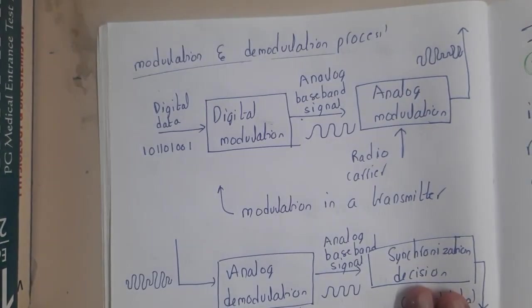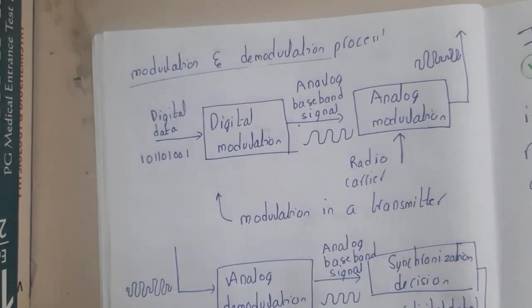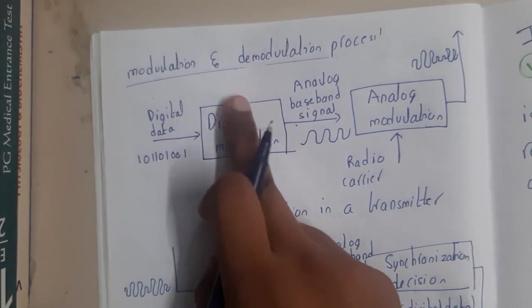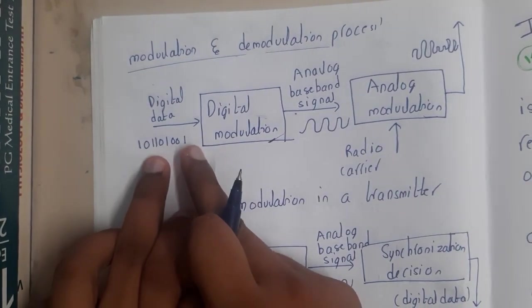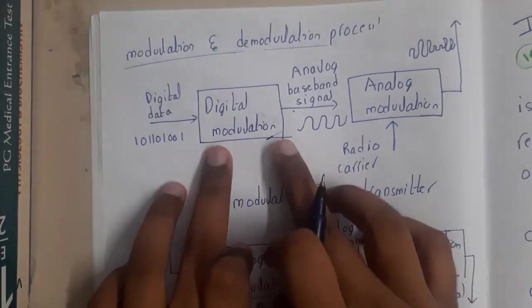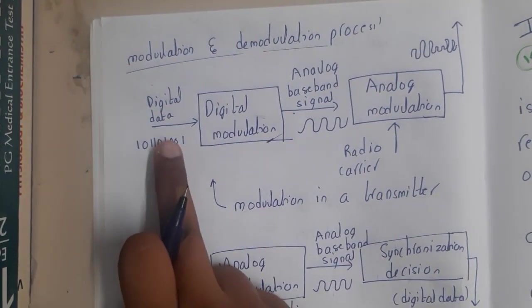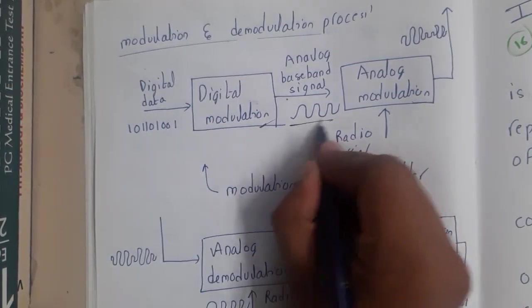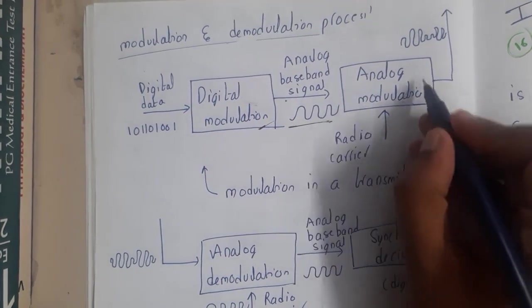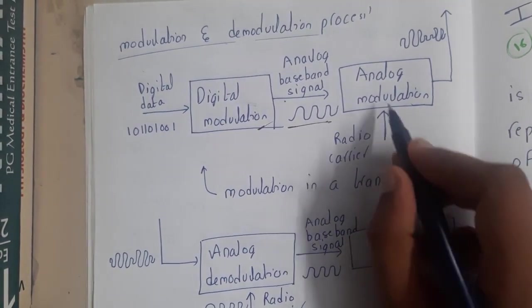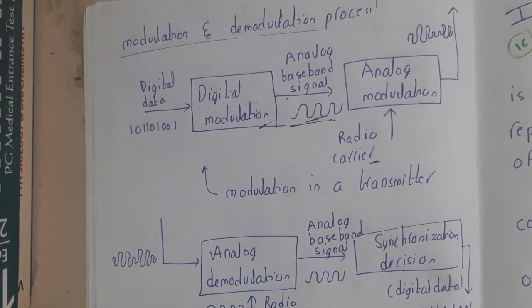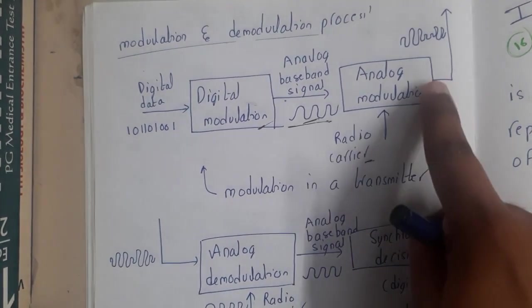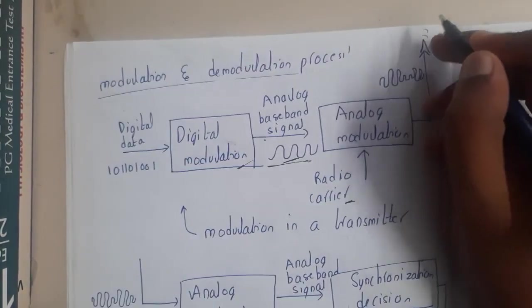For more clarity, I have drawn block diagrams of the modulation and demodulation process. Initially our digital data is sent into a digital modulator, whose goal is to convert the digital signal into analog. This analog signal is then passed into an analog modulator, where it is combined with a radio carrier signal and released from the transmitting antenna.